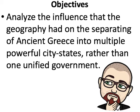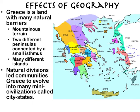Mesopotamia had different city-states too, kind of similar. But anyway, let's get into it. Here we see this beautifully colored map of Greece, and we can tell this is ancient Greece because it's showing many many different city-states.